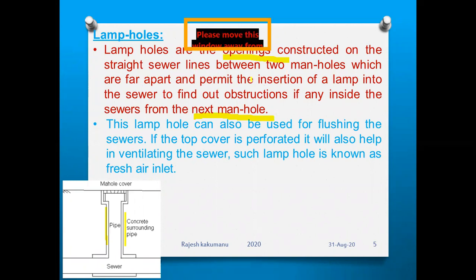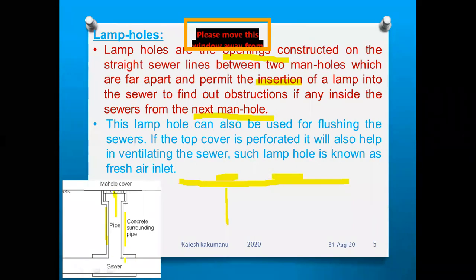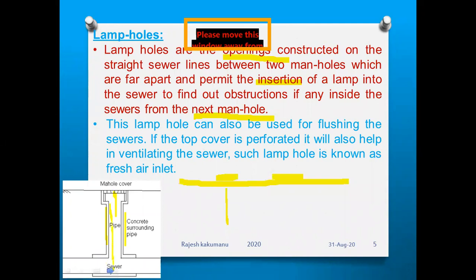If this is a manhole at the surface of the road, and this is a straight-line sewer pipeline, a person can enter the manhole and use an insertion lamp to see through and find obstructions, damages, leakages, or blockages inside the next manhole. Lamp holes are used for inspection of sewer pipelines.